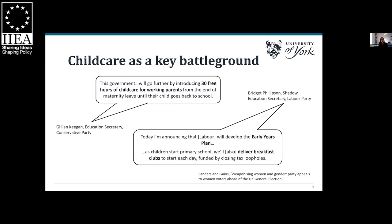Labour's childcare pledges include launching a review into the early years sector and, most notably, a pledge to fund universal breakfast clubs for all primary schools in England — described by children's charities as cost-effective due to food provision as well as wraparound childcare. Notably, Labour stopped short of offering universal childcare, a pledge they had made in the 2017 and 2019 elections. This perhaps reflects their aim to restore economic credibility — we've seen comments from Labour leader Keir Starmer about how a Labour government won't 'turn on the spending taps.'